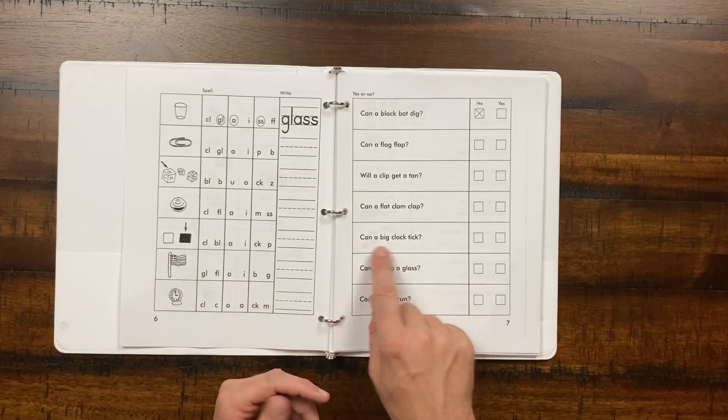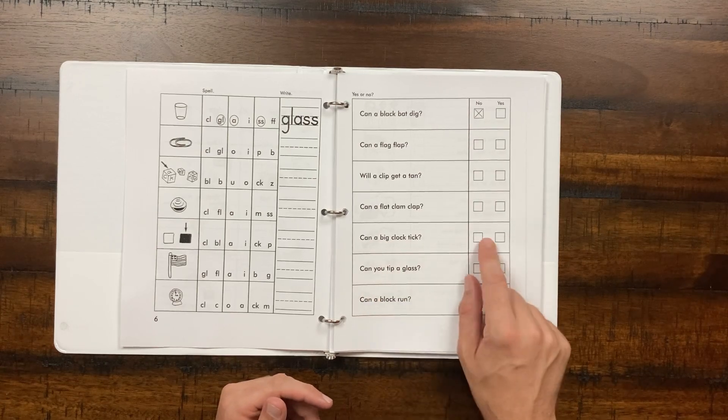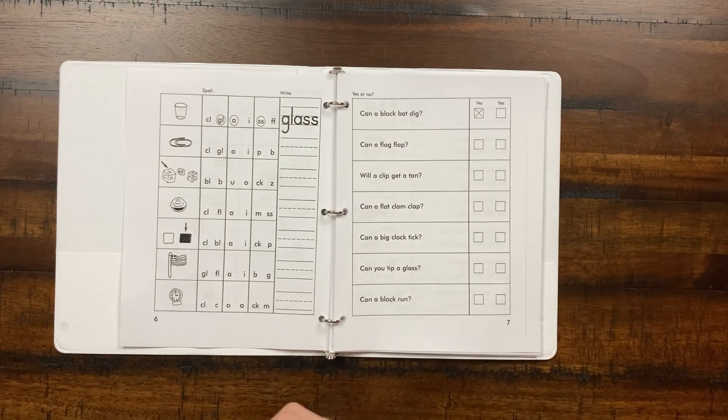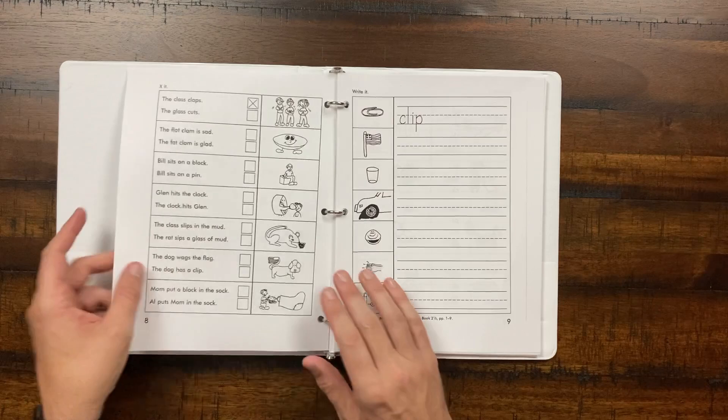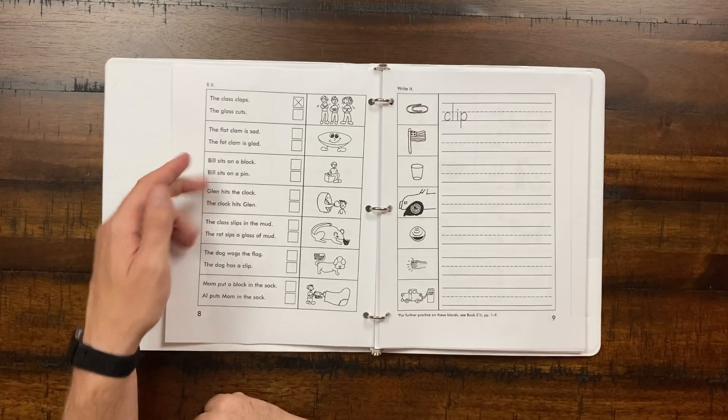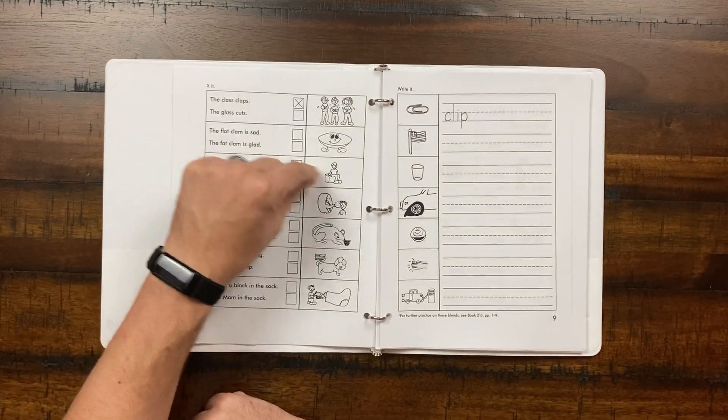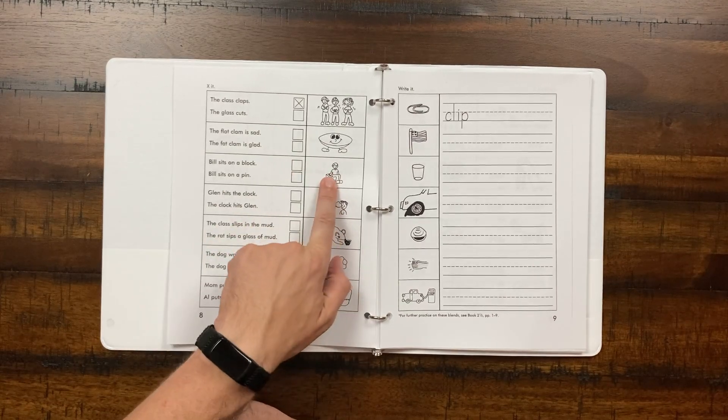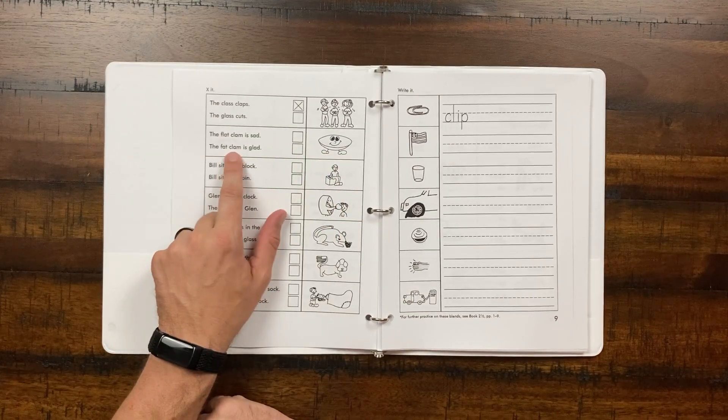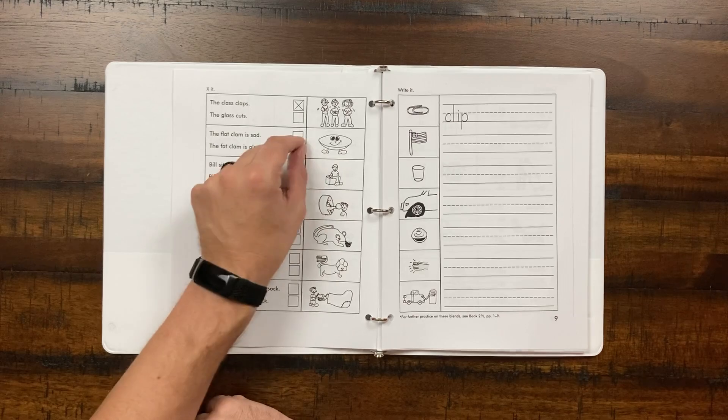So whatever type of method you want to do with respect to early literacy activities, do those. But basically what you're doing is you're asking this, can a big clock tick? Well, yes or no, obviously yes. And so they'll go ahead and mark that. And then finally here, we're reading between two sentences, and we're going ahead and exiting the one that matches the image. So here we are looking for the fat clam is glad, and then she'll go ahead and mark that one.